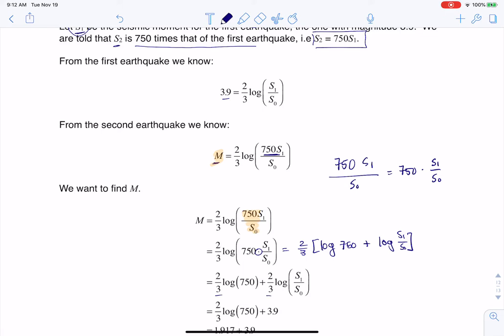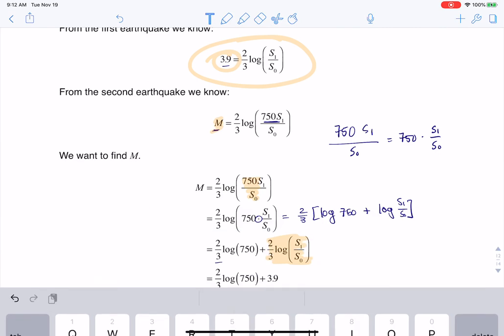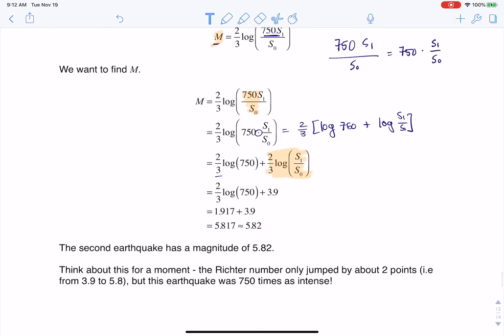And then you see me here just distributing the 2 3rds. But the thing is, once I do that, if we take a look at this expression here, this 2 3rds log S sub 1 to S sub 0, we actually already know from the first equation that is equal to 3.9. And that's why you see me subbing that in right here. So that's why I have this 3.9 right here. And then the cool thing is that you can see that this other logarithm that's hanging out is just a number that I can crunch in my calculator, and that's what I did. So when I calculated 2 3rds log of 750, I got 1.917.